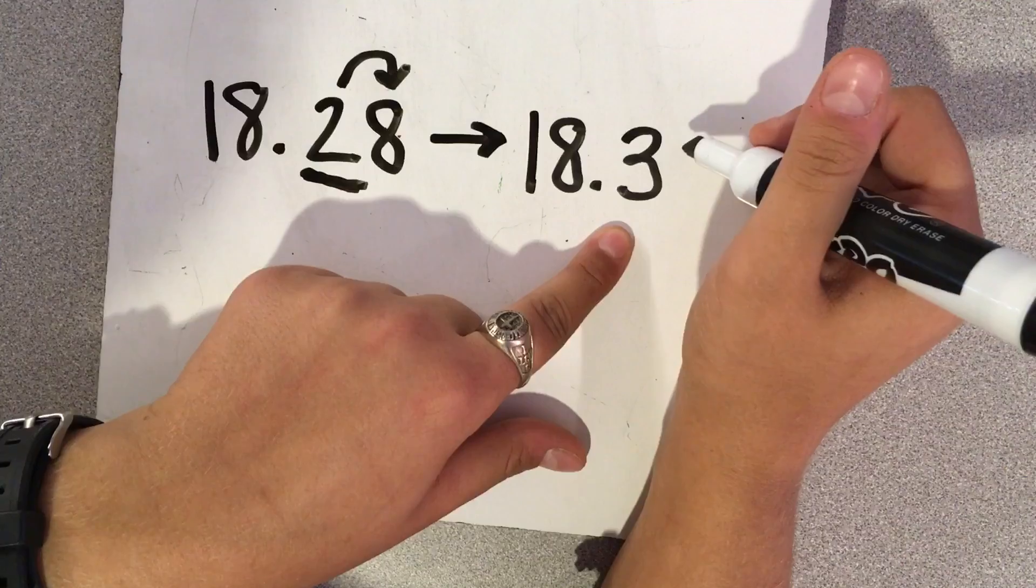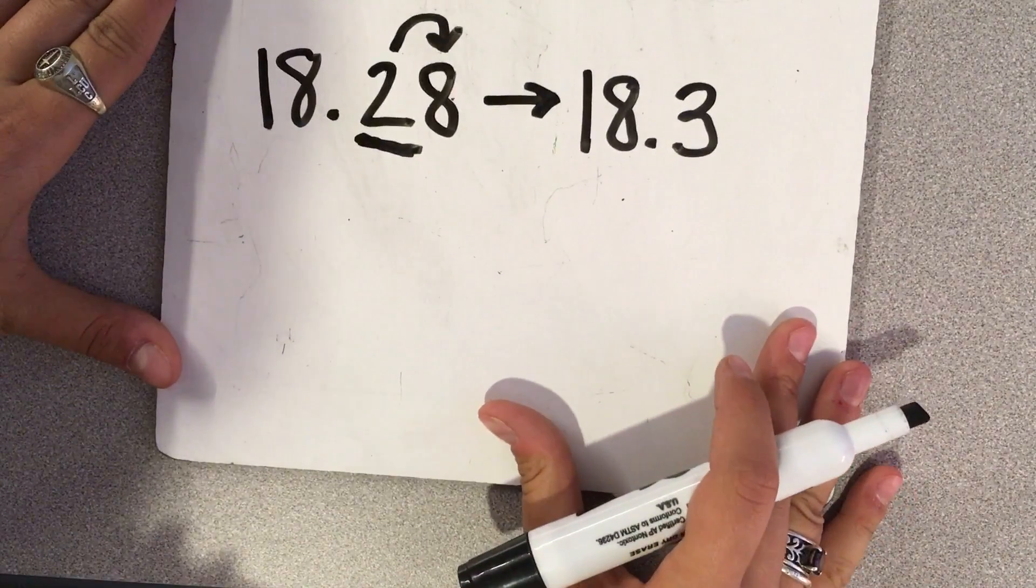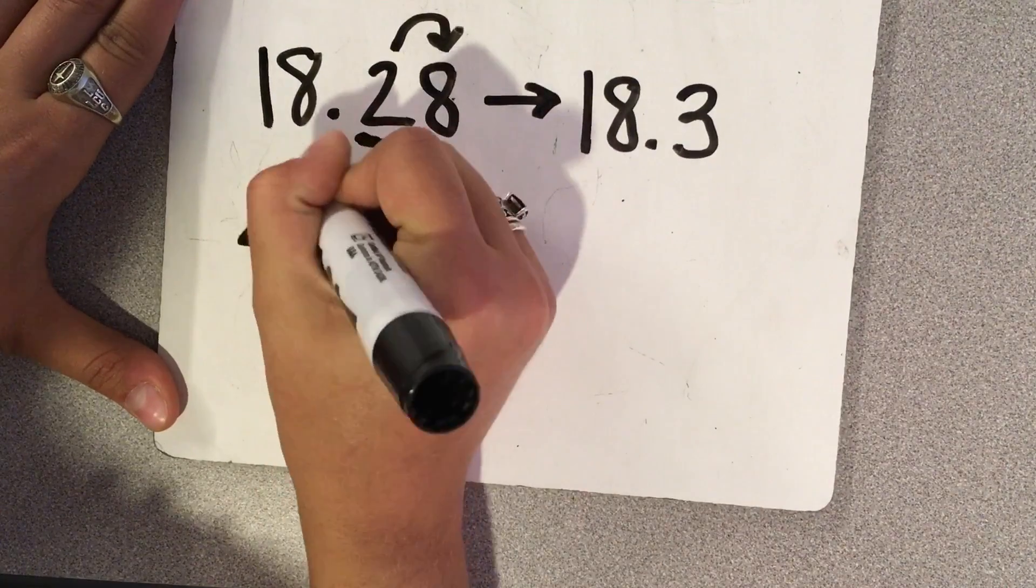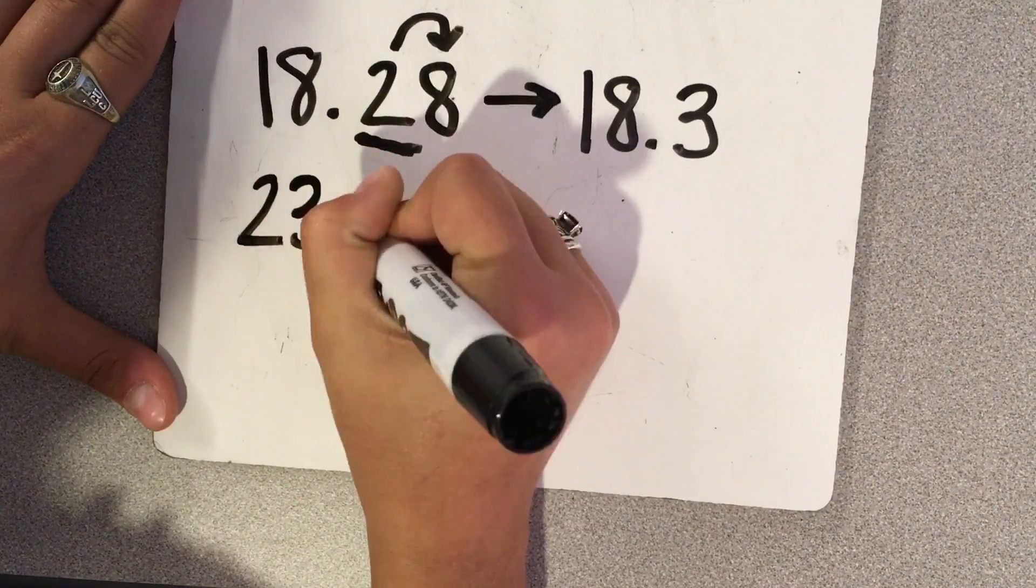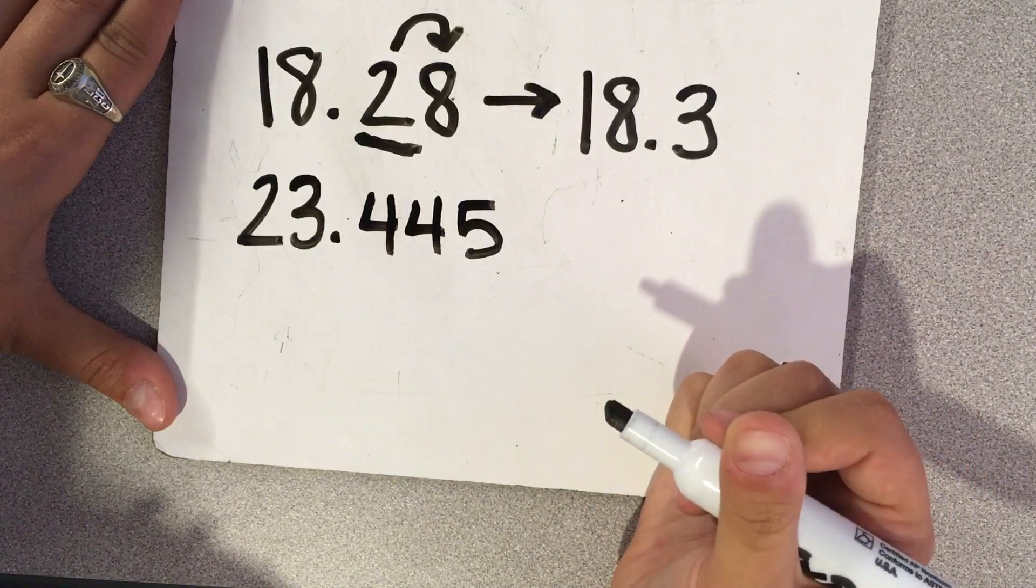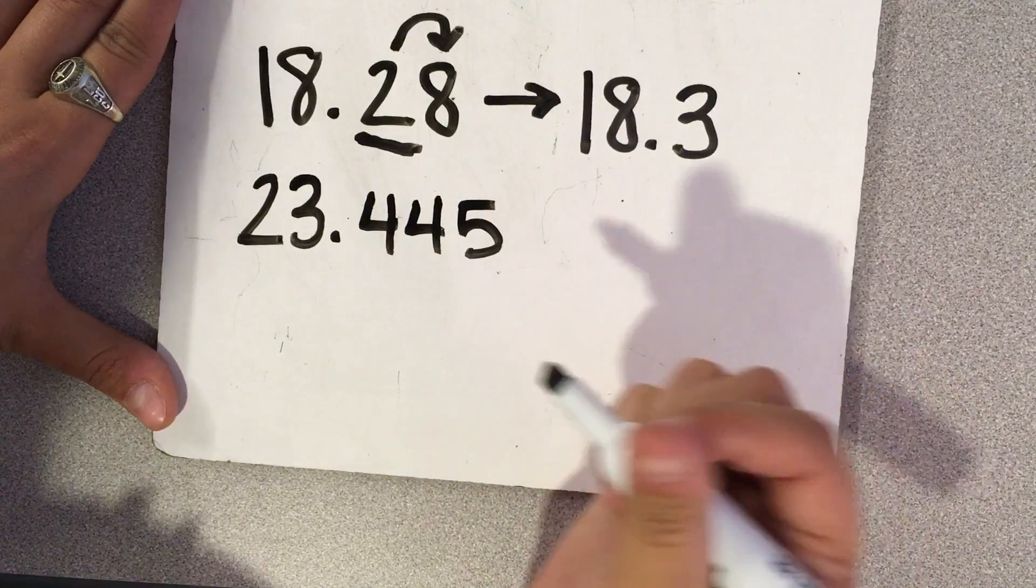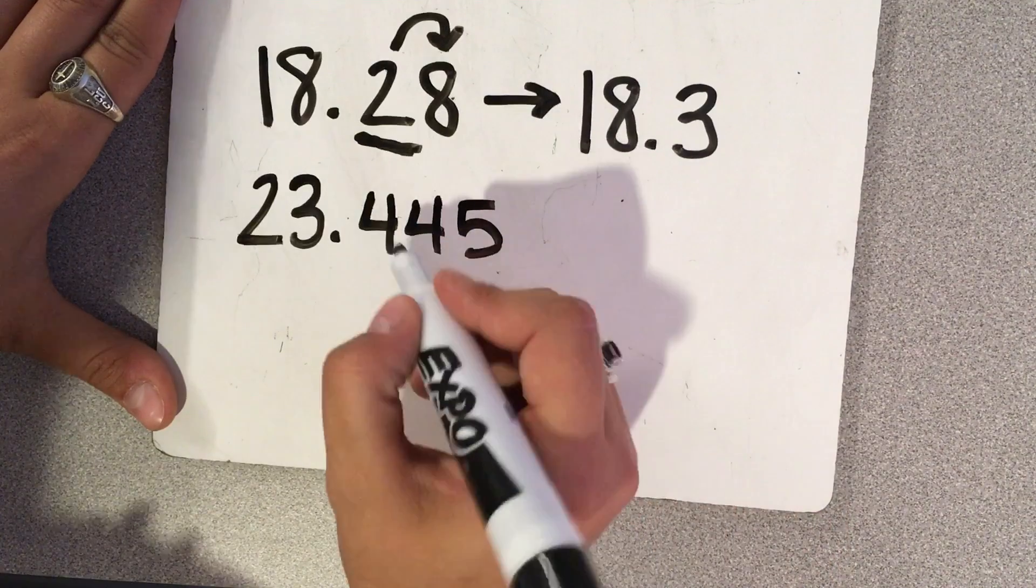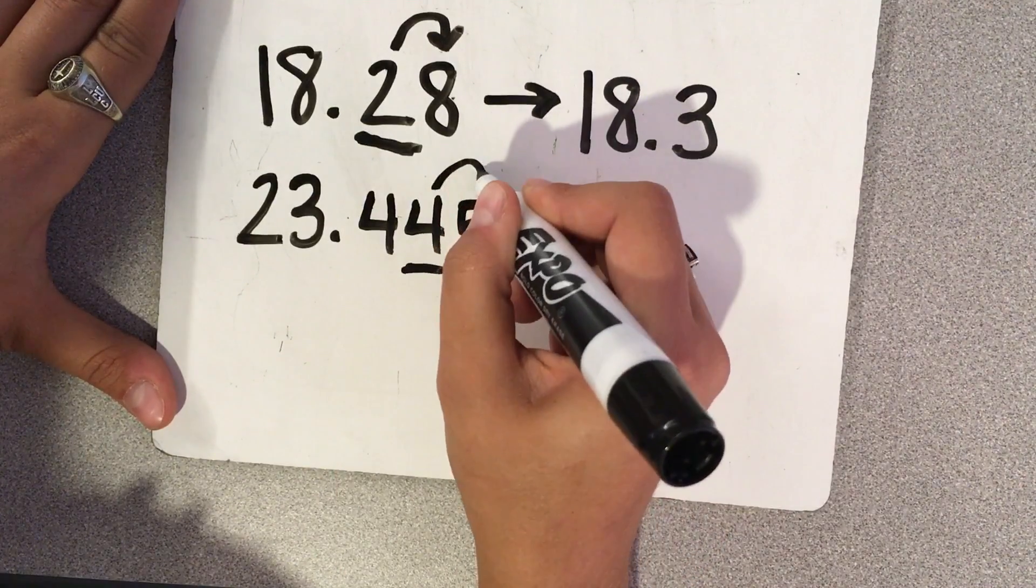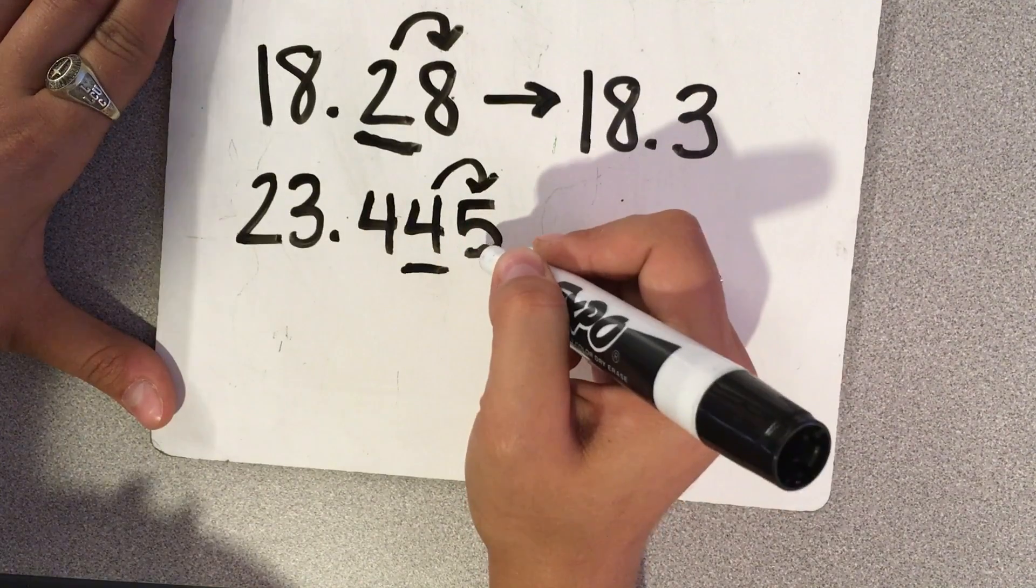Then if we needed to round to the hundredths, 23 and 445 thousandths. If I need to round to the nearest hundredths, I underline my hundredths place value, I look next door to the thousandths, and it's 5 or more,